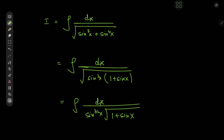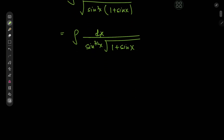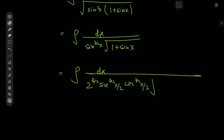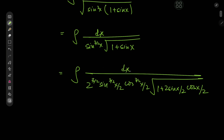This is where the double angle formula comes in really handy. We'll expand both sine functions, so sin x equals 2·sin(x/2)·cos(x/2), meaning we have the integral of dx divided by 2^(3/2)·sin^(3/2)(x/2)·cos^(3/2)(x/2), and the same thing for the other function: 1 + 2·sin(x/2)·cos(x/2).